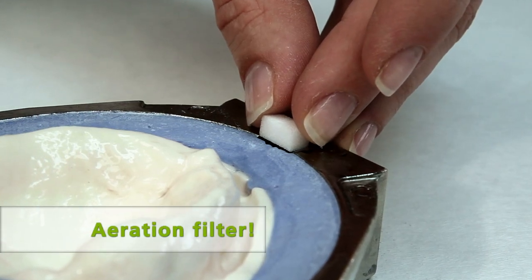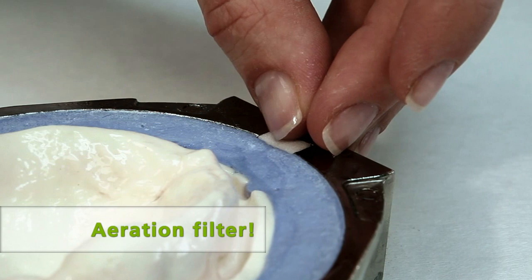Take the aeration filter and place it flush in the corresponding recess in the flask.